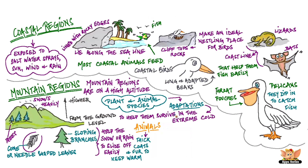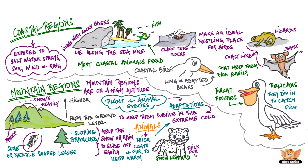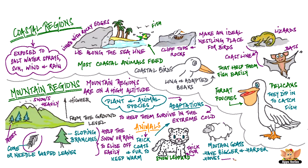Similarly, the animals living in the mountains have thicker coats and fur to keep them warm in the extreme cold. The snow leopard has a thick fur even on its paws to protect itself from the snow. The mountain goat has bigger and harder hoofs that help it to climb steep mountains easily. Different kinds of adaptations are seen in different animals as you go higher up in the mountains.